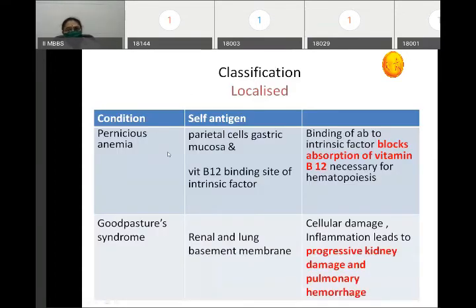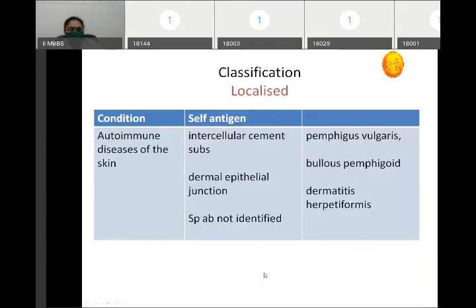In pernicious anemia, antibodies are produced against parietal cells in gastric mucosa and the vitamin B12 binding site of intrinsic factor. This blocks absorption of vitamin B12, which is required for synthesis of blood cells, leading to megaloblastic anemia. In Goodpasture syndrome, antibodies against renal and lung basement membrane lead to inflammation, progressive kidney damage, and pulmonary hemorrhage. Autoimmune skin diseases include pemphigus vulgaris, where antibodies target intercellular substance, and bullous pemphigoid, where antibodies target the dermal-epidermal junction. Dermatitis herpetiformis is also considered autoimmune.